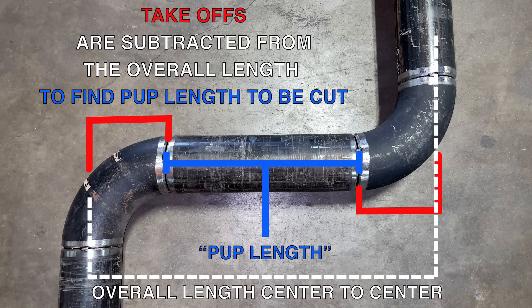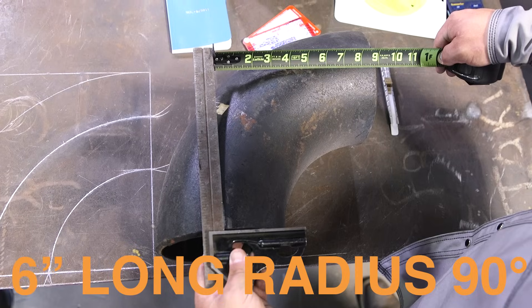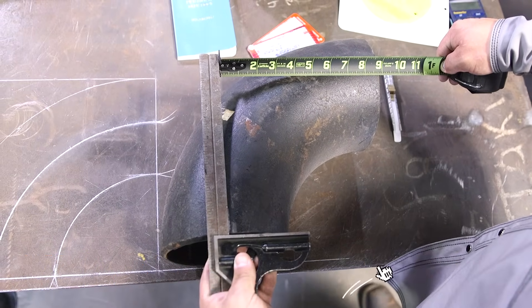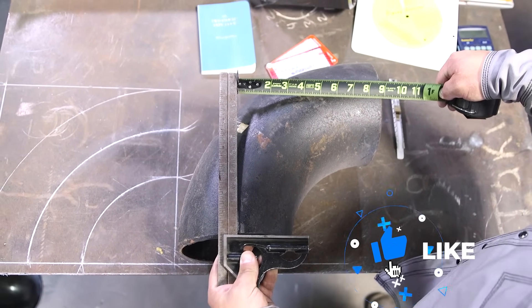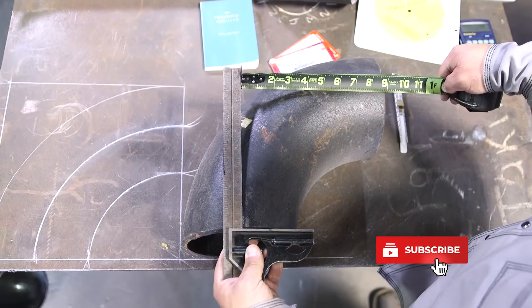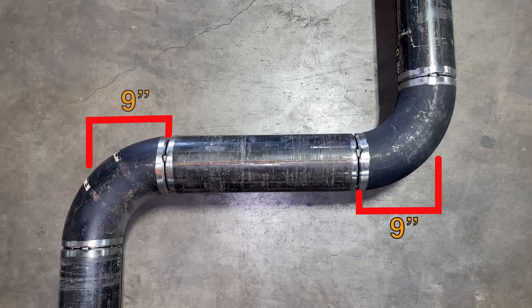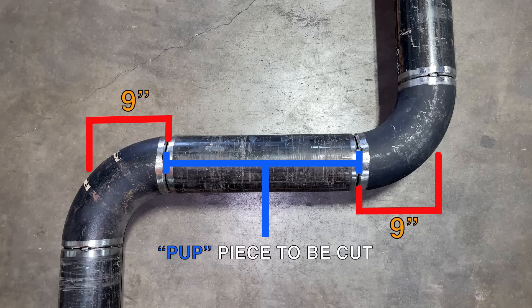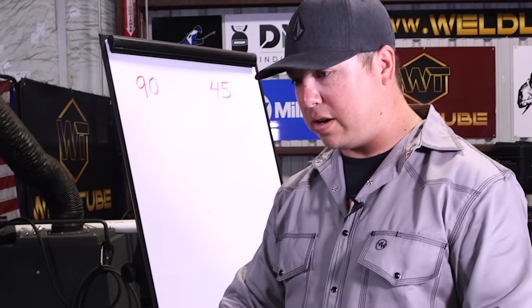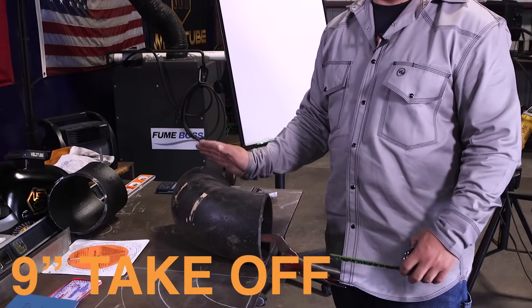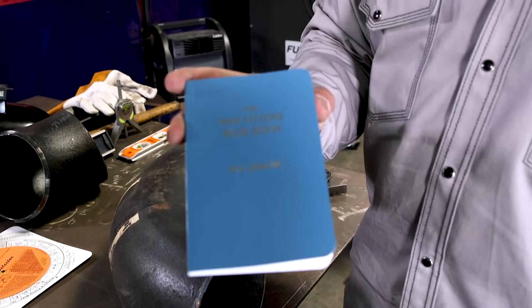All right guys, so I got a 6 inch long radius 90 here and I'm going to explain to you guys what the actual takeoff is when we're accounting for our measuring here. So the takeoff of this is the section of pipe that we are going to remove in order to account for the distance this 90 is. So on this particular case, a 6 inch 90 here, it's going to be 9 inches. And how do we find this information?